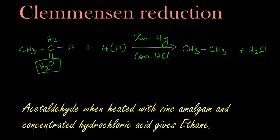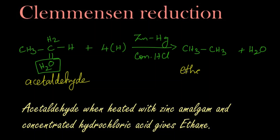So, acetaldehyde is reduced in the presence of zinc amalgam and concentrated hydrochloric acid to give ethane. This reaction is known as Clemmensen reduction. To summarize: acetaldehyde when heated with zinc amalgam and concentrated HCl gives ethane.